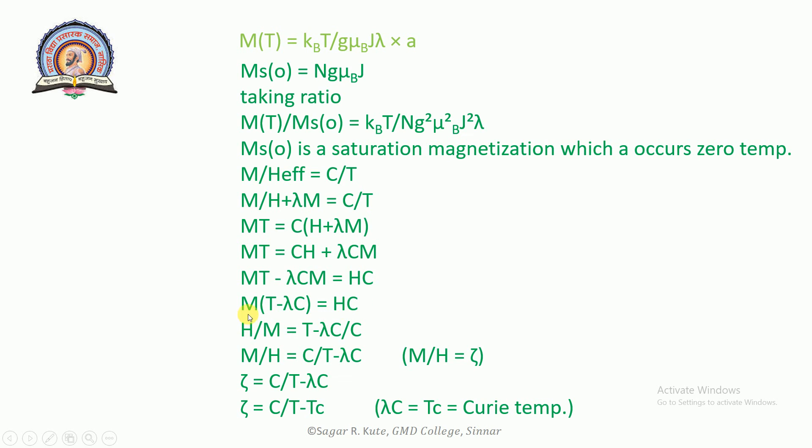Rearranging: H over M equals T minus lambda C over C. That is M over H equals C over (T minus lambda C). M over H equals C over (T minus Tc), where lambda C equals Tc. This is the Curie temperature. This is called the Curie-Weiss Law.